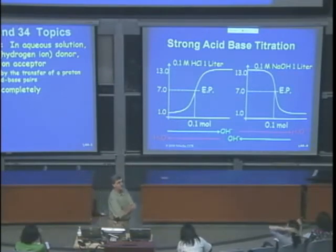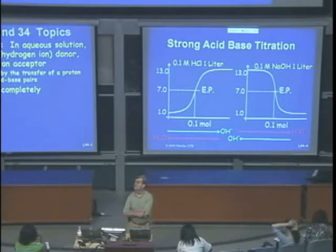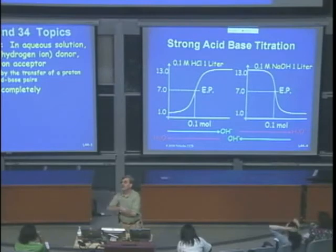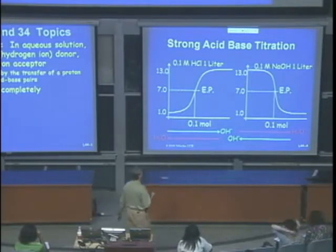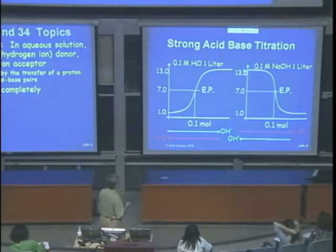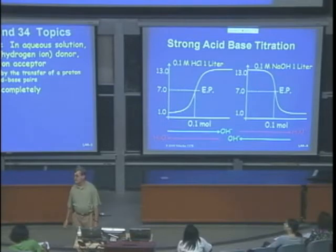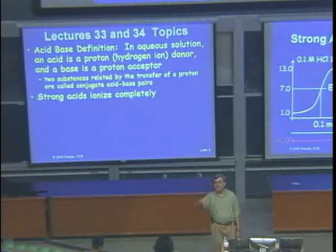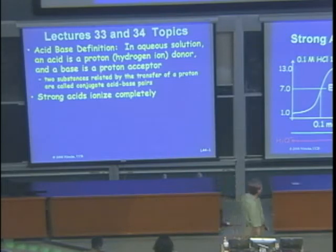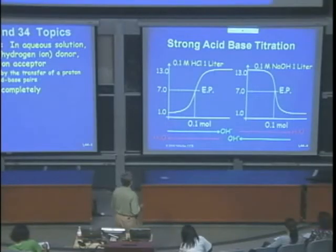For a 0.1 molar sodium hydroxide solution — that's a strong base — the pH is 13. And for a 1 molar sodium hydroxide solution, the pH is 14. Bases always have pH much larger than 7.